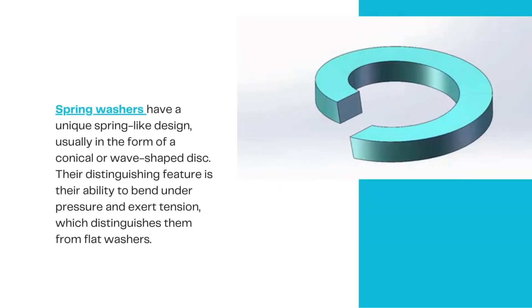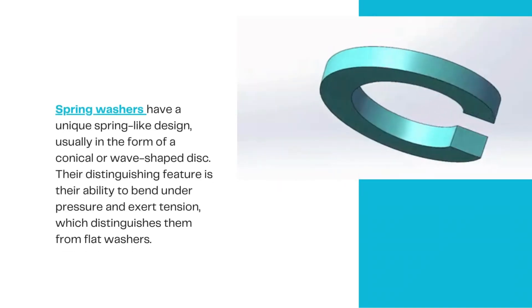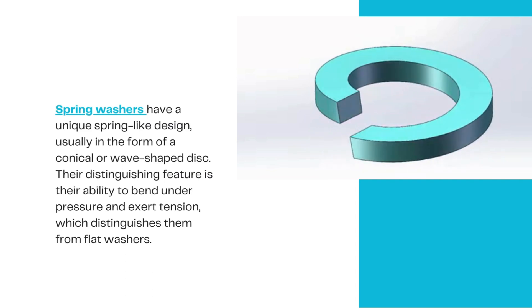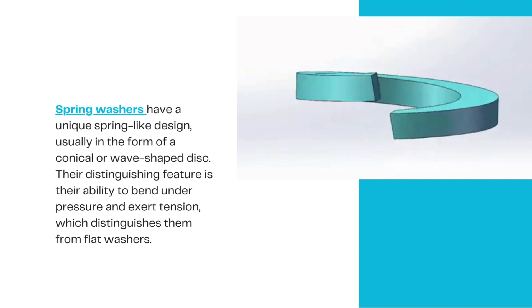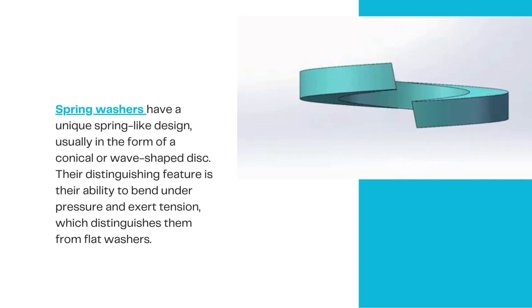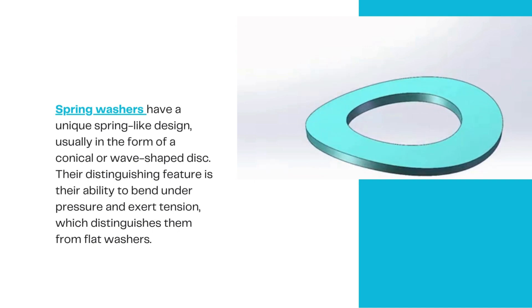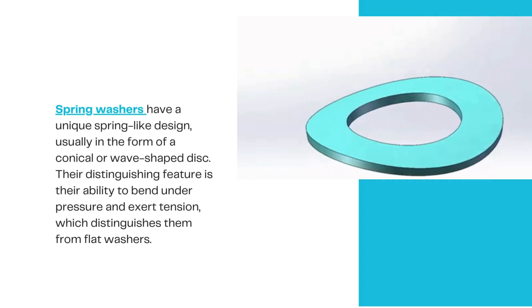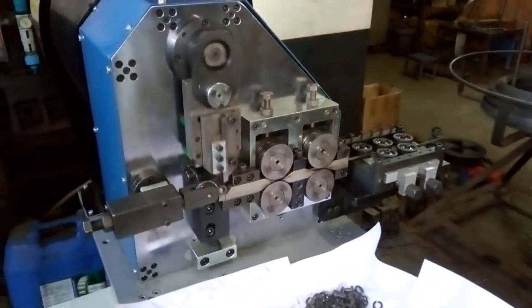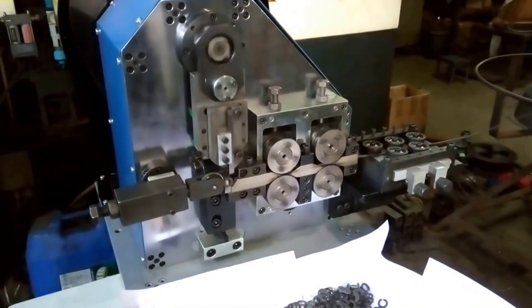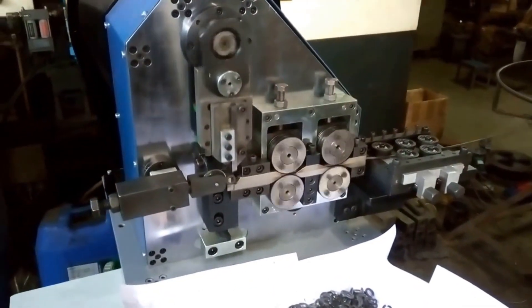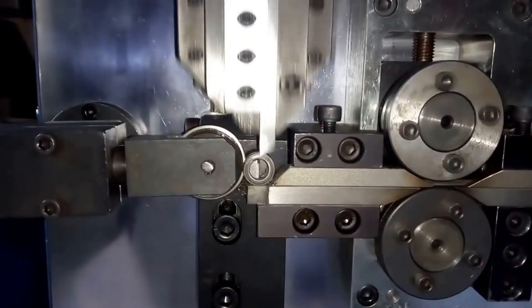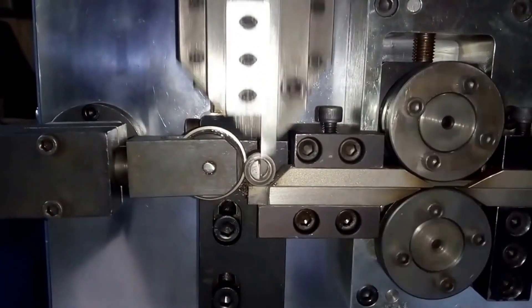Spring washers have a unique spring-like design, usually in the form of a conical or wave-shaped disc. Their distinguishing feature is their ability to bend under pressure and exert tension, which distinguishes them from flat washers. Understanding the differences between these two important parts — flat washers and spring washers — is key to making informed decisions in fastening applications.